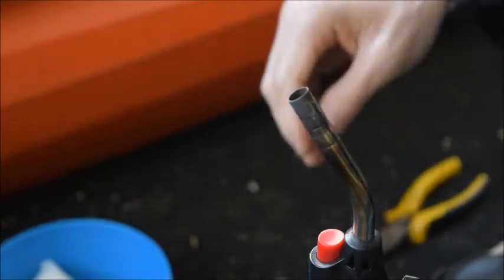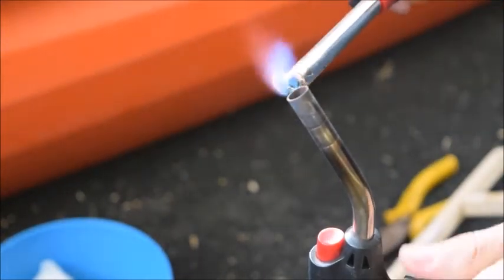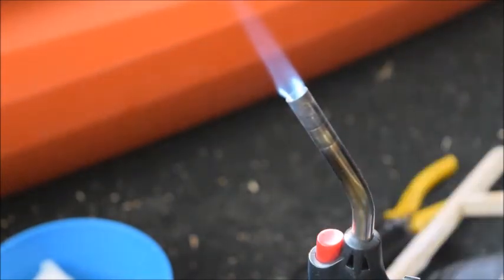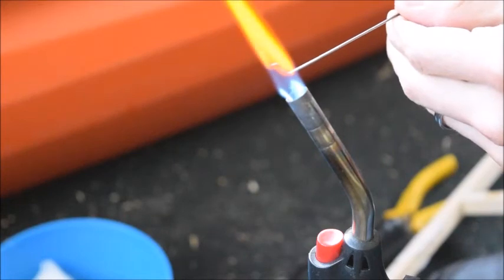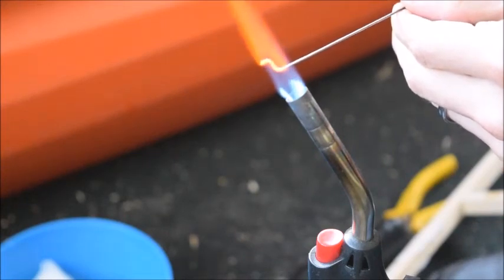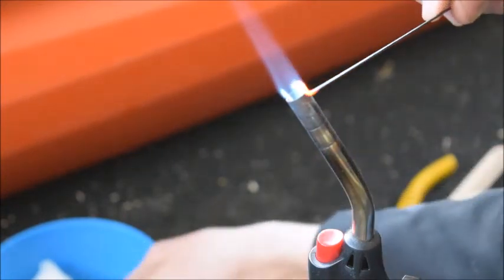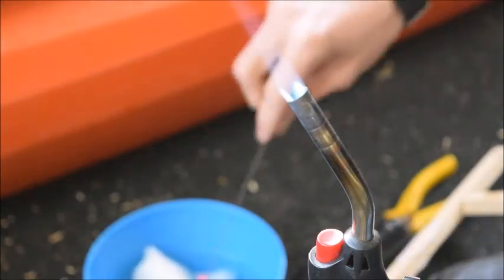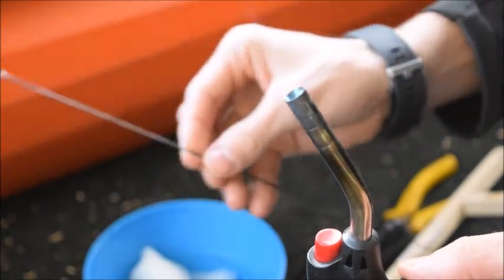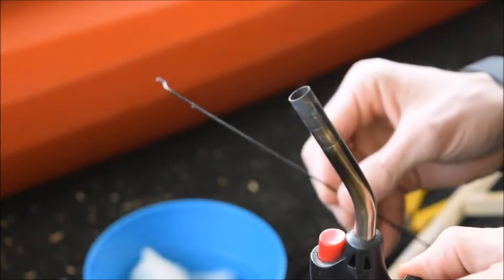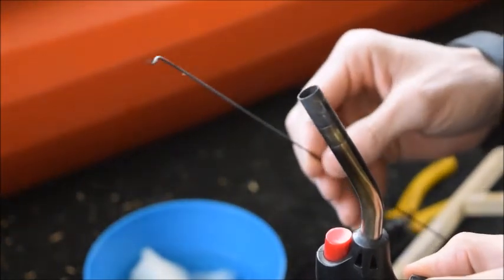What I like doing is then hit my Z-bends with the torch. Hit it until it turns red. And then dunk it in my bowl of water to lock in the shape. And that's how you make a custom pushrod out of wire.